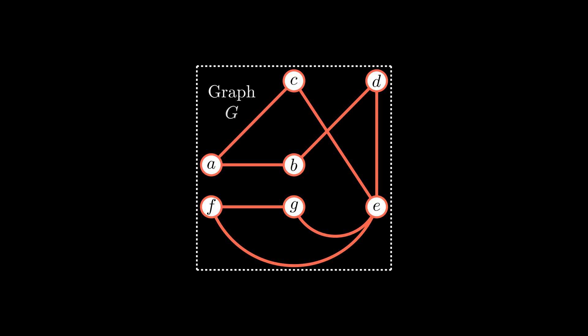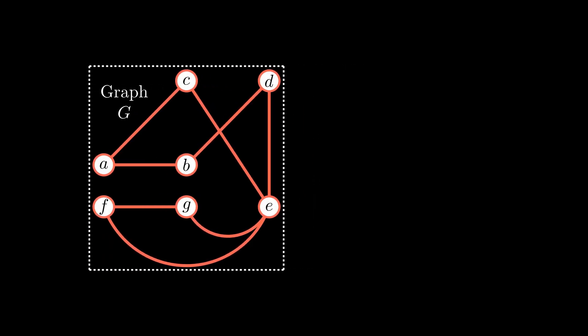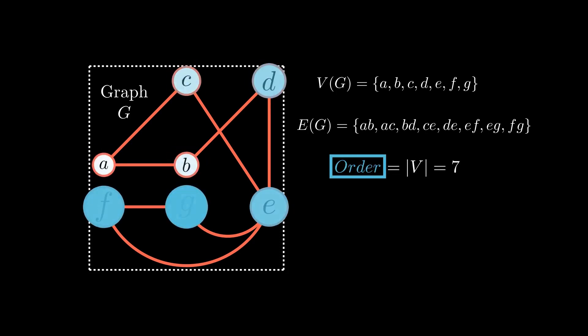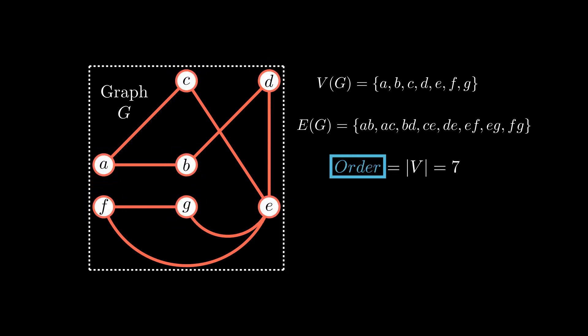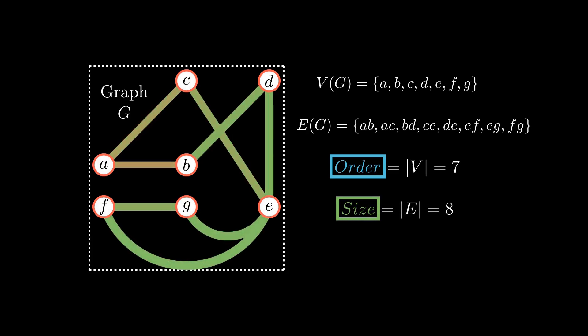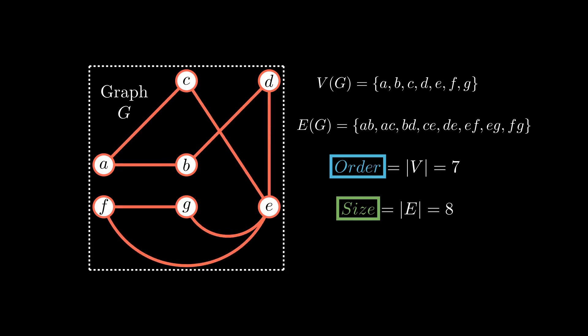Now we will get to know some characteristics of a simple graph. In graph theory, the total number of vertices is defined to be the order of the graph. As you can see in this example, the order is 7. The order of a graph G is therefore the cardinality of the set V. The total number of edges is named as the size of the graph. The size here is 8. The size of a graph G is the cardinality of the set E.